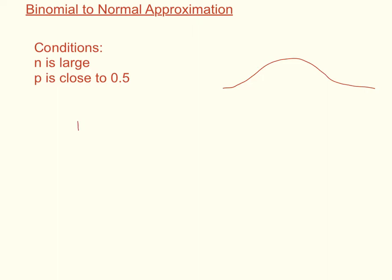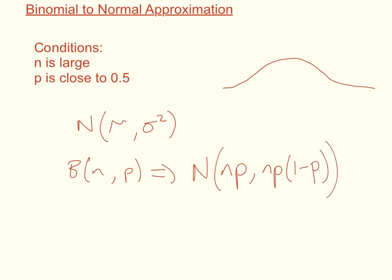The normal distribution is given as the mean and the variance. The binomial distribution is given as n and the probability. So when we are converting a binomial to a normal, we have to calculate the mean and variance. We have to write this as np, which is the mean, and the variance, which is np times 1 minus p. That's how we're going to be calculating those values.